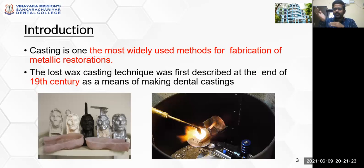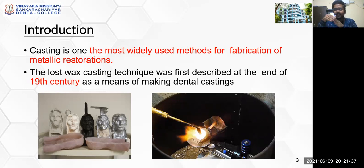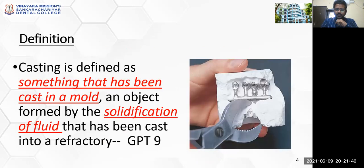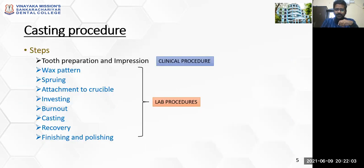The same lost wax technique is used in different ways, not just for casting metal. The process of the lost wax technique was first described at the end of the 19th century for making dental castings and was incorporated into dentistry by a Canadian dentist named W.H. Taggart. The definition of casting, according to GPT-9, is: an object formed by the solidification of fluid that has been cast into a refractory mold.